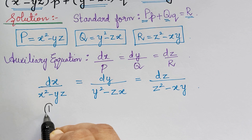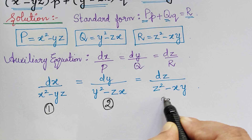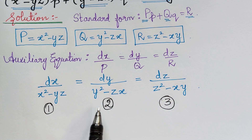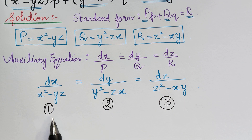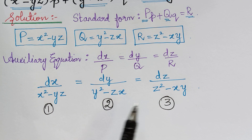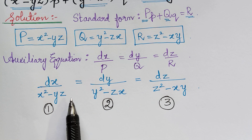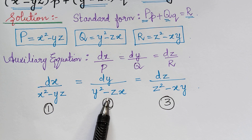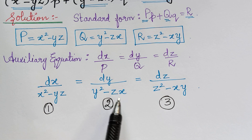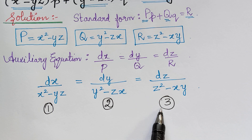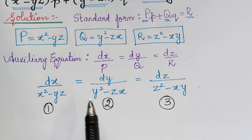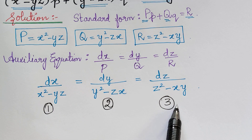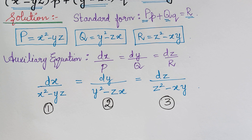We mark the ratios as 1, 2, and 3. Comparing equations 1 and 2, 2 and 3, and 1 and 3, we observe that we cannot apply the method of grouping. Neither can we apply the method of multipliers, because by choosing multipliers L, M, and N, we cannot make the denominator zero. So instead, we will perform operations among these ratios to form new ratios and solve the problem.